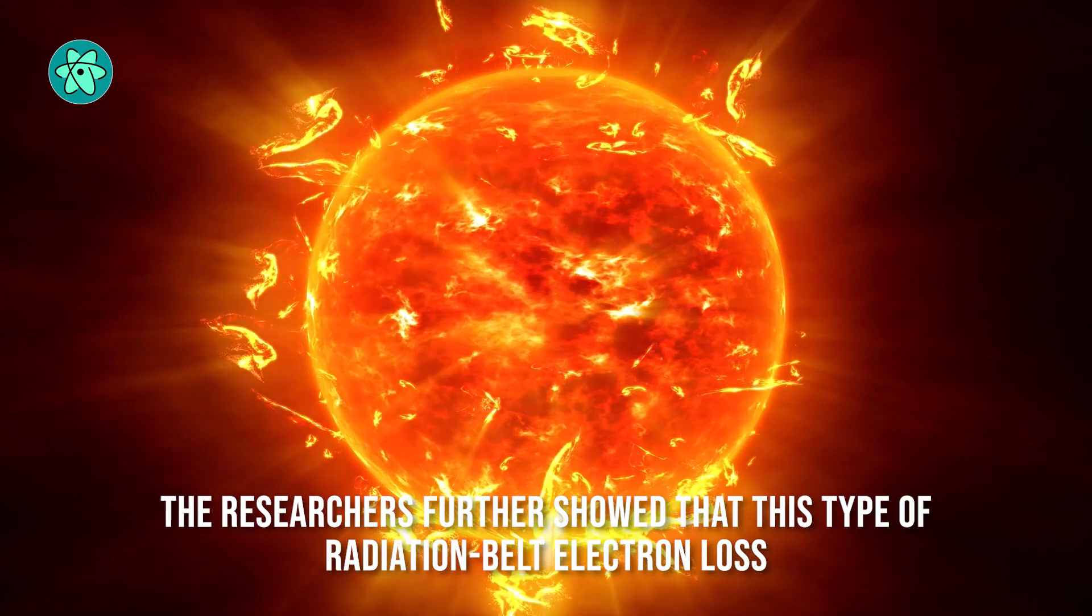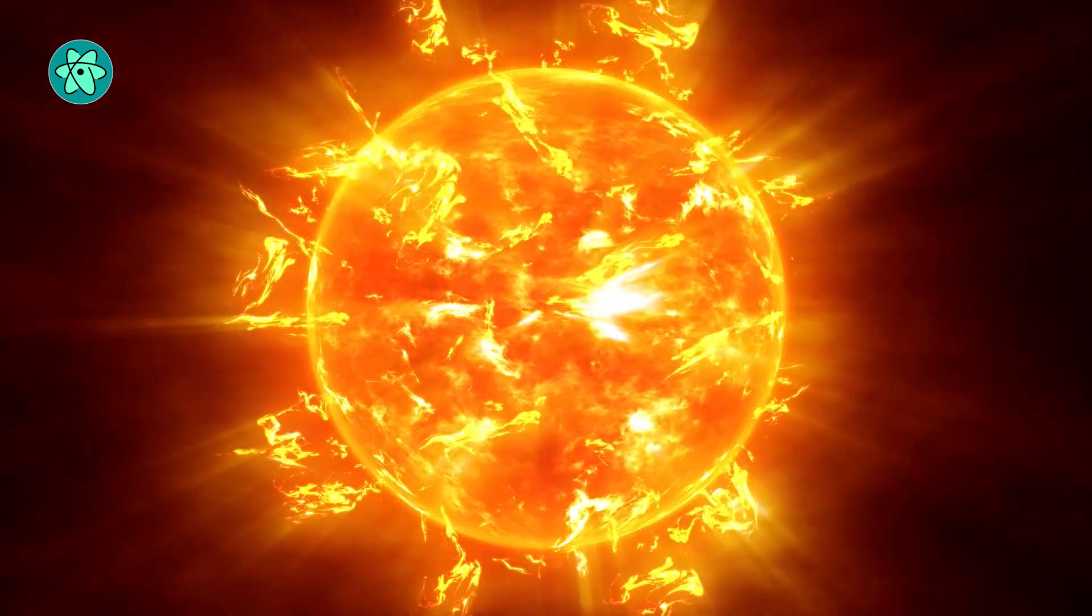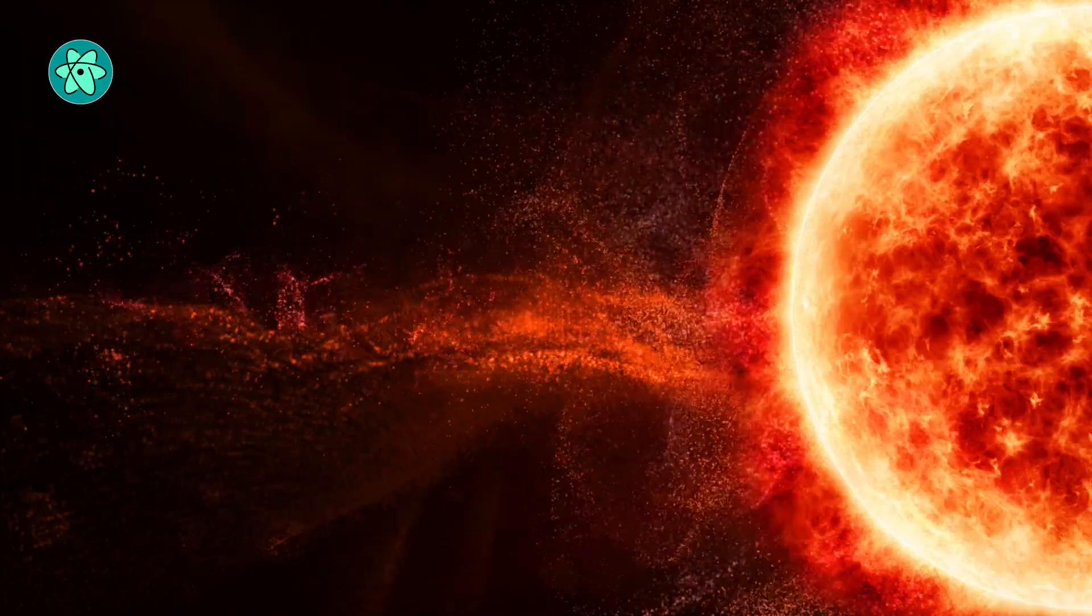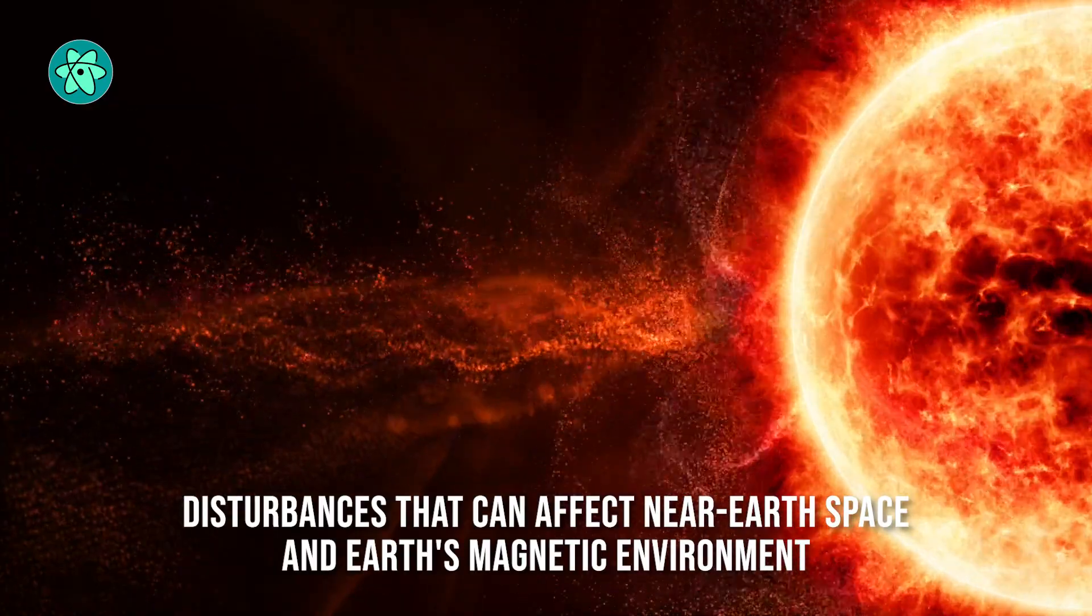The researchers further showed that this type of radiation belt electron loss to the atmosphere can increase significantly during geomagnetic storms, disturbances that can affect near-Earth space and Earth's magnetic environment.